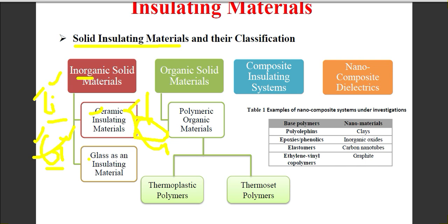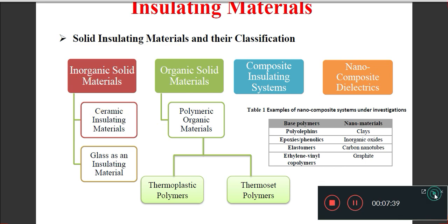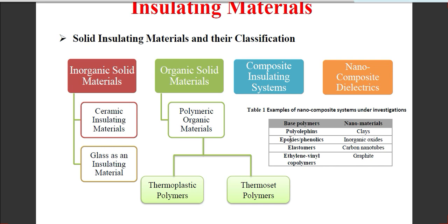Coming to organic solid materials, we have polymer organic materials. Within polymer organic materials there are two types: thermoplastic and thermoset. This polymer is a composite material. In transmission and distribution lines, they are increasingly using polymer material. If breakdown occurs in ceramic, we have to replace the material entirely.